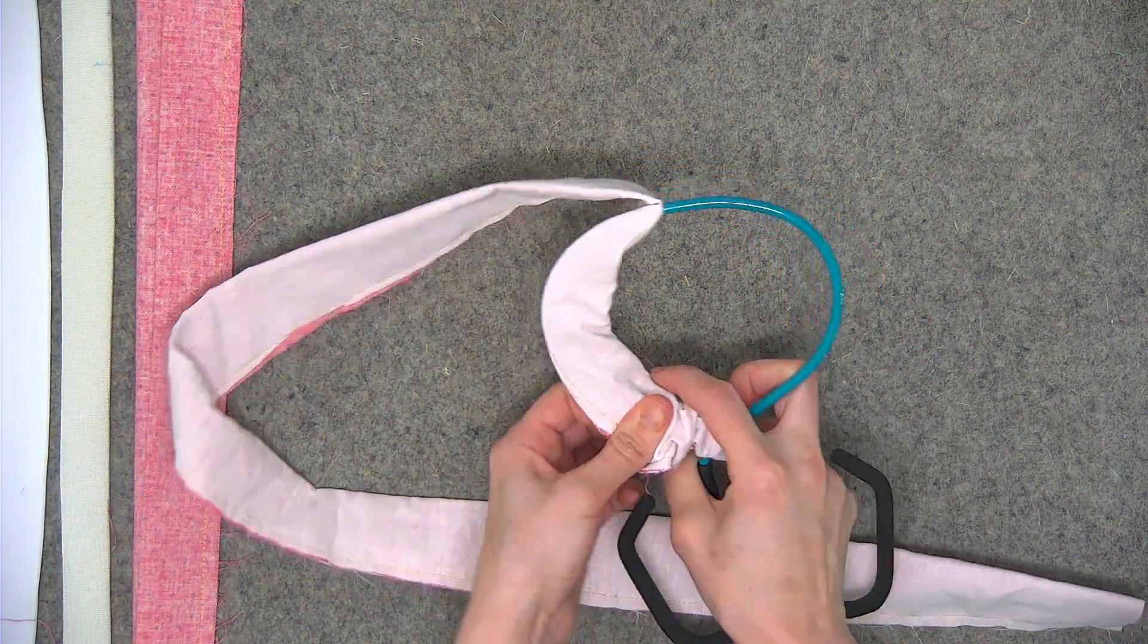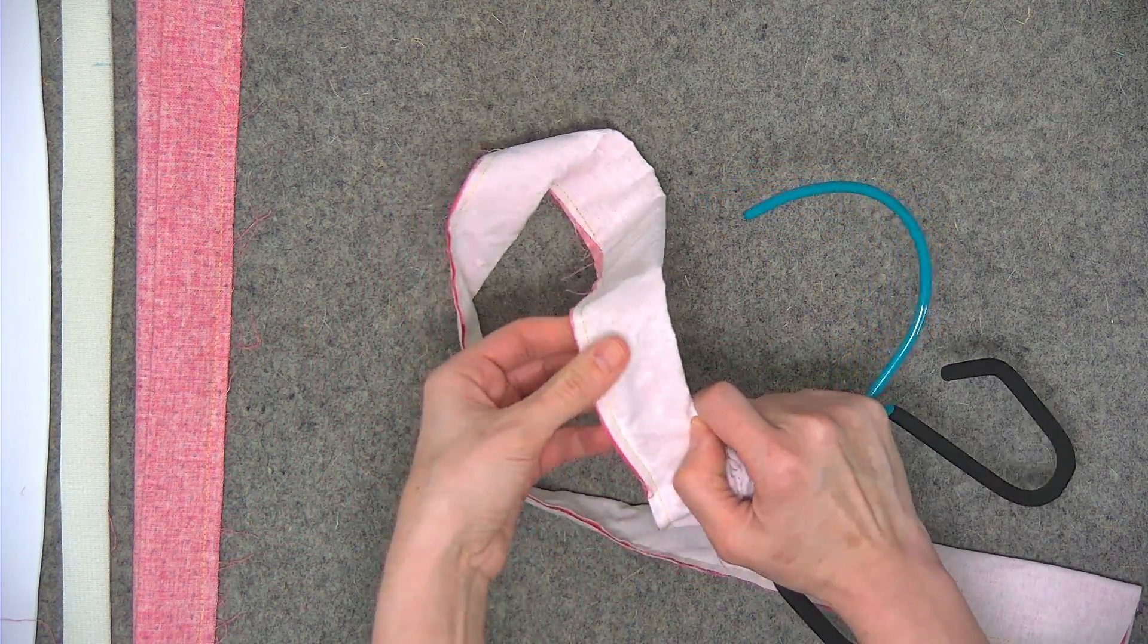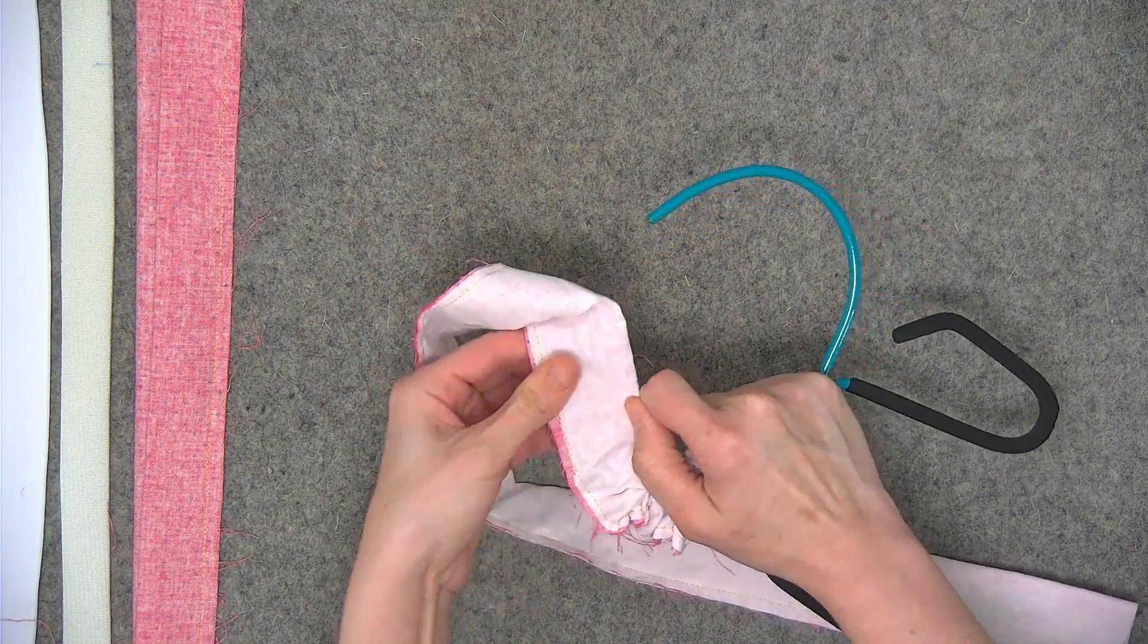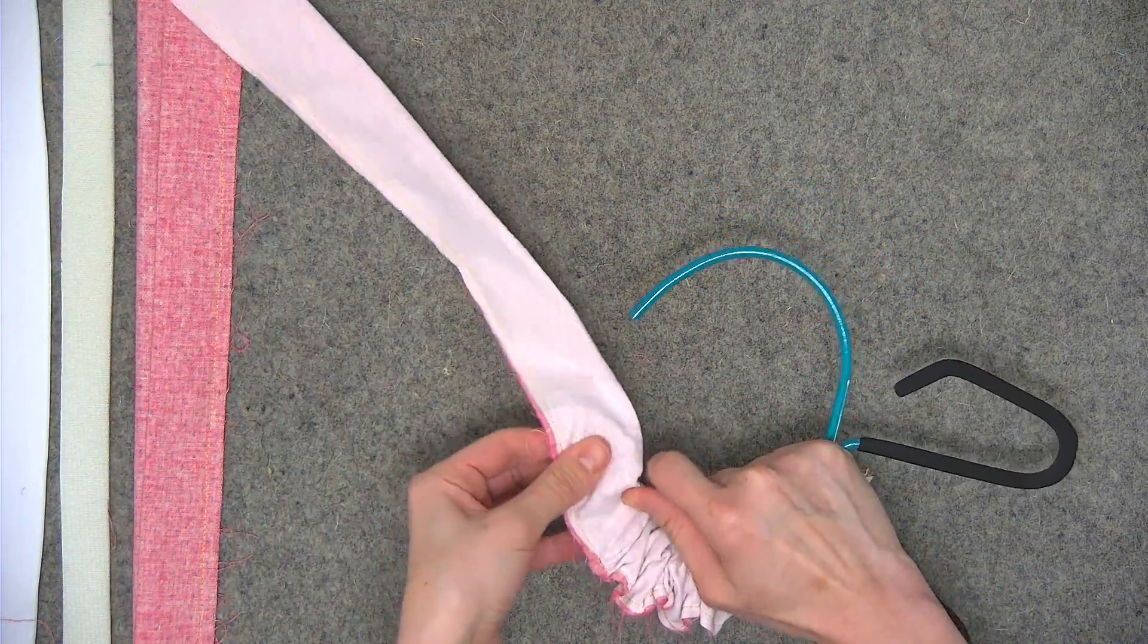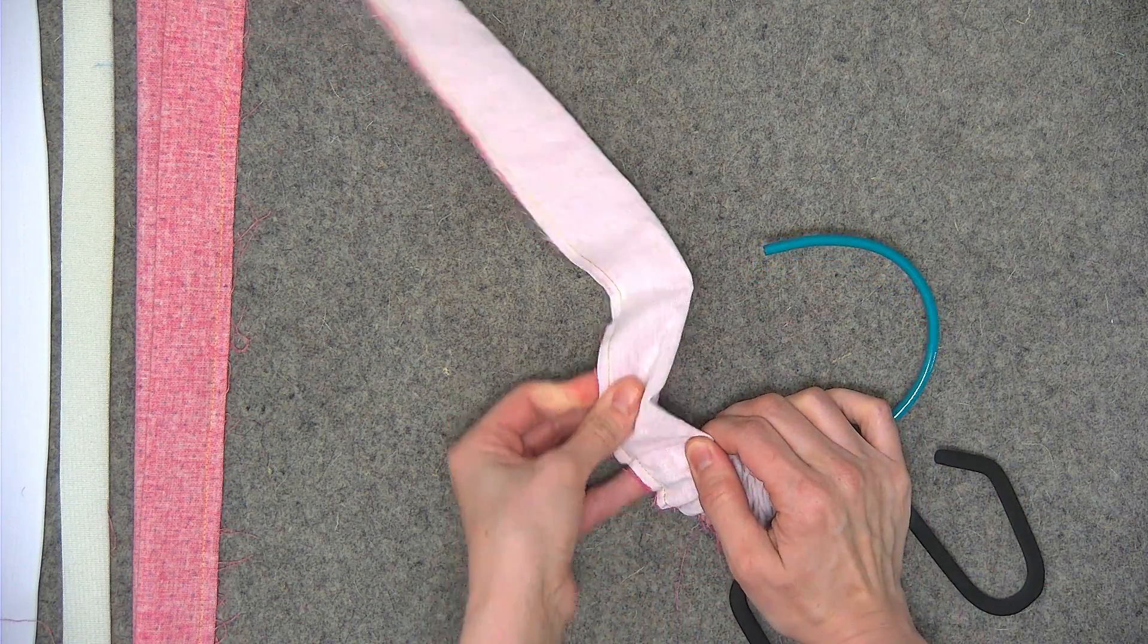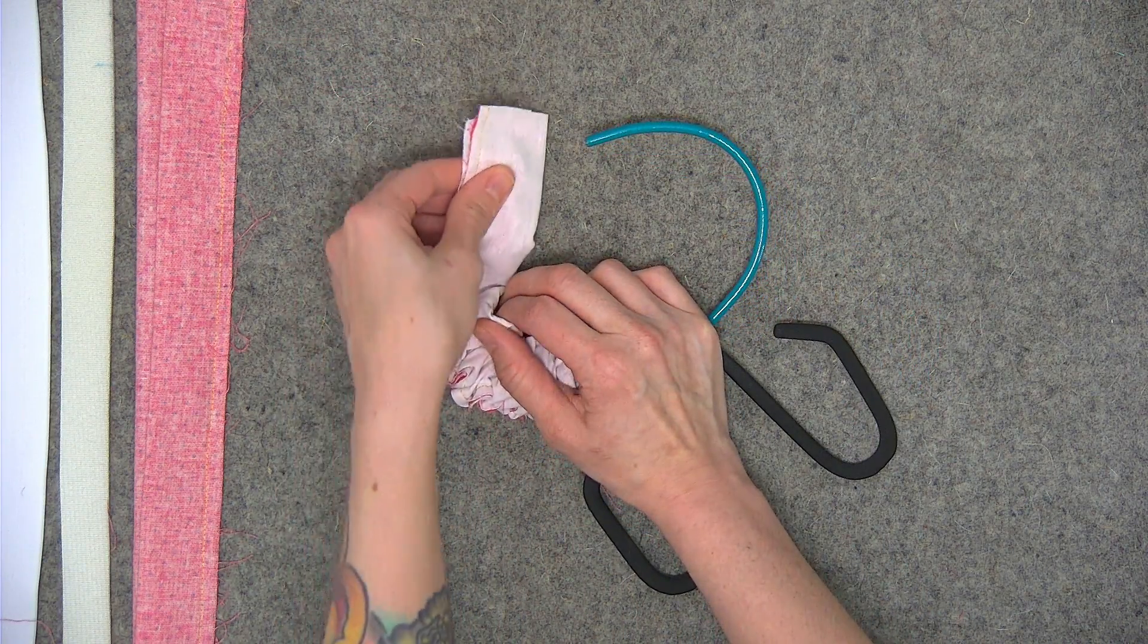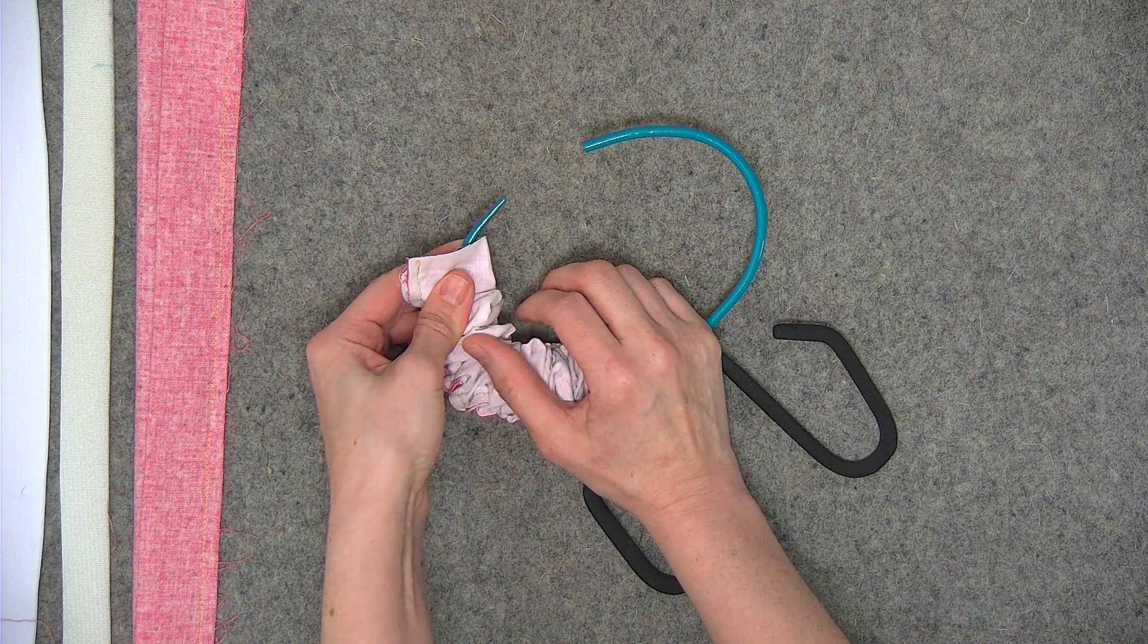So first you'll need to go ahead and slide all of your fabric on the tool. I cut my fabric selvedge to selvedge so as you can see it's super super long but you can just go ahead and stuff that fabric down on the tool. Okay so I've reached the end.